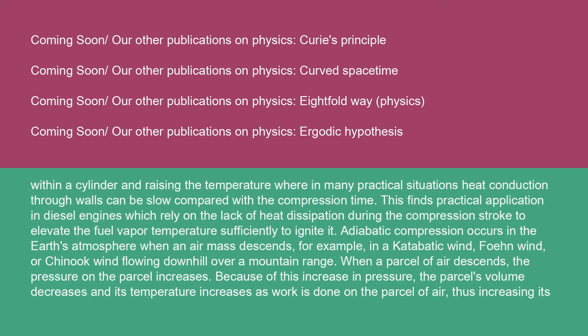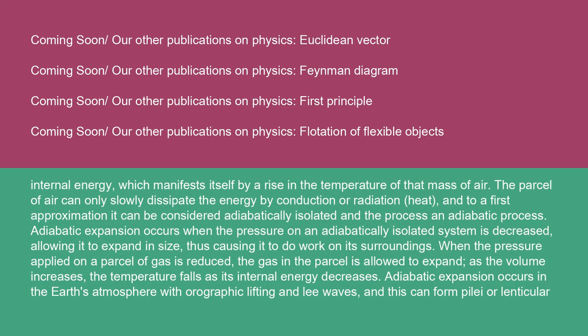Adiabatic compression occurs in the Earth's atmosphere when an air mass descends — for example, in a katabatic wind, foehn wind, or chinook wind flowing downhill over a mountain range. When a parcel of air descends, the pressure on the parcel increases; because of this increase in pressure, the parcel's volume decreases and its temperature increases as work is done on the parcel of air, thus increasing its internal energy, which manifests itself by a rise in temperature of that mass of air. The parcel can only slowly dissipate the energy by conduction or radiation, and to a first approximation it can be considered adiabatically isolated.